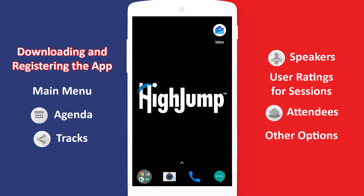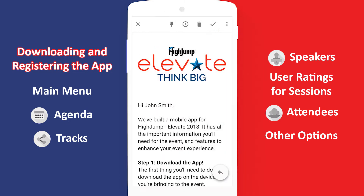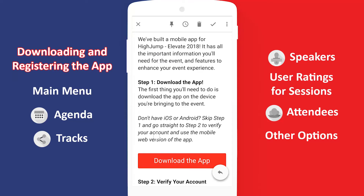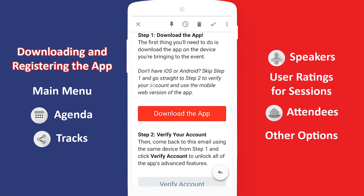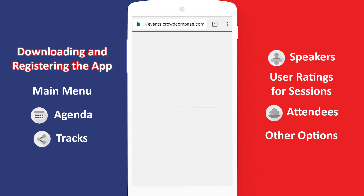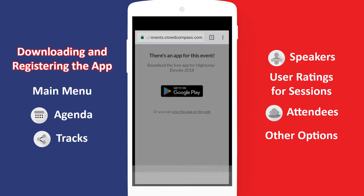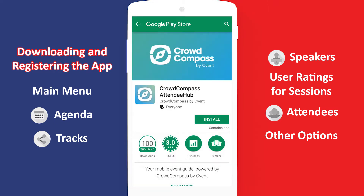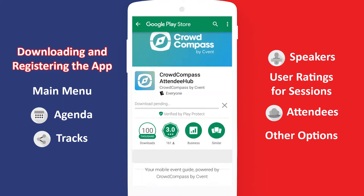First, take a look at your inbox. We've sent you an email with a download link to the email address you used to register for Elevate 2018. Open the link on your phone and it will take you to the Play or App Store based on the device you're using. Download and install the Crowd Compass Attendee Hub app.